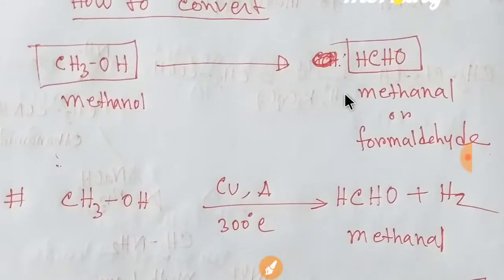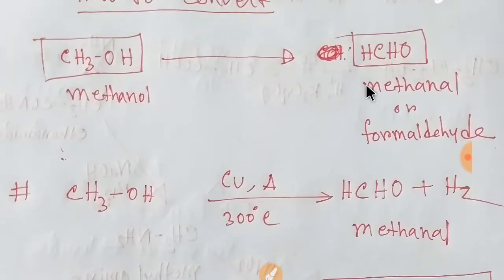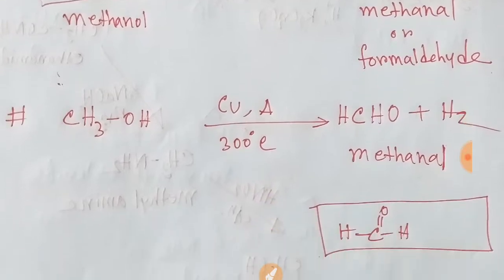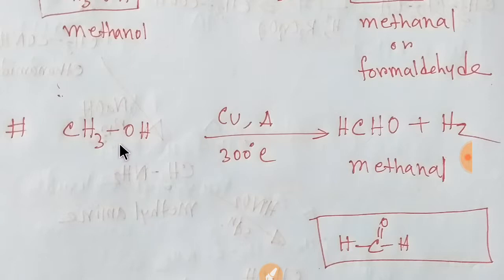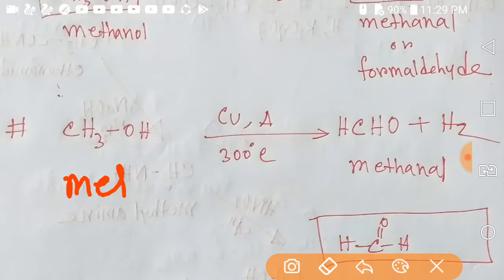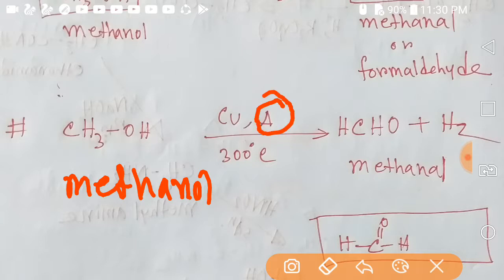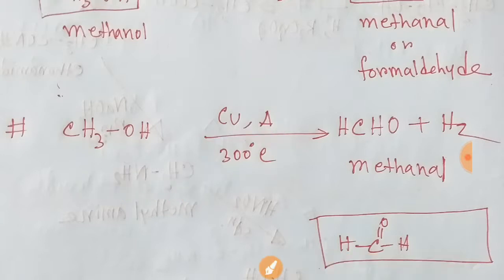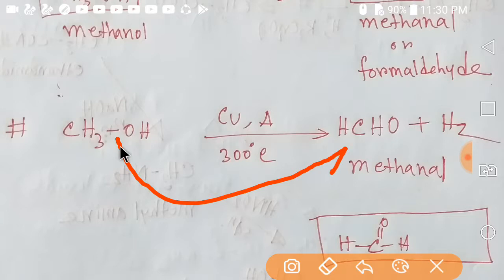First, we'll learn about the conversion of methanol to formaldehyde, or methanal. Methanal is the IUPAC name and formaldehyde is the general name. If you heat methanol at 300 degrees Celsius in the presence of a copper catalyst, then you will get methanal or formaldehyde.